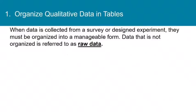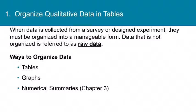Now in Chapter 1, we talked about how to collect data from observational studies or surveys or designed experiments, and after you collect the data, you have to organize it into some manageable form so you can get information from it. Data that is not organized yet is referred to as raw data, and what it looks like to us is just a list of numbers, and it's very difficult to look at a list of numbers and draw any meaningful conclusions. Some ways we can organize data are tables, which we'll talk about in this section, and graphs, and numerical summaries such as mean, median, mode, and all the rest, and we'll look at those in Chapter 3.